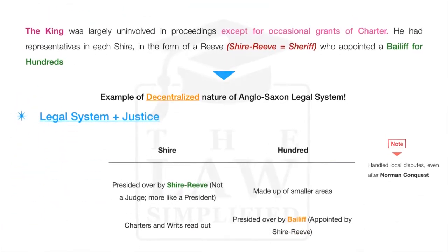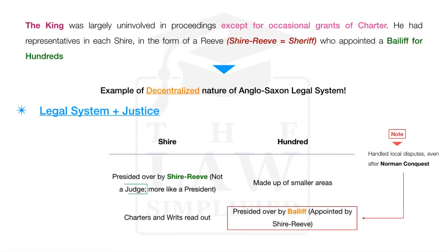The king himself was largely uninvolved in proceedings except for occasional grants or charters — which you can equate to the modern realm of an executive order. He had several representatives in those smaller administrative districts, such as the shires and the hundreds. Notably, the person who was the king's representative in charge of the shire was known as a shire reeve. A shire reeve became known as a sheriff, and today we still have this role, though perhaps not in the same capacity.